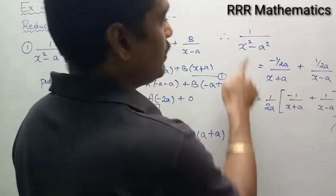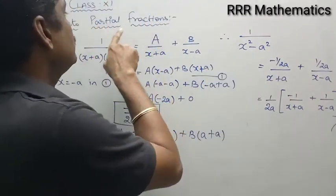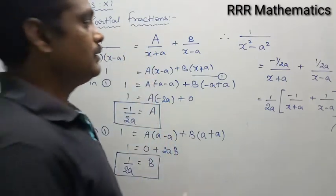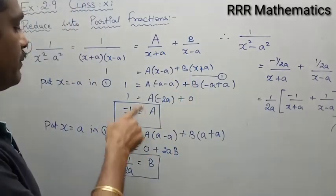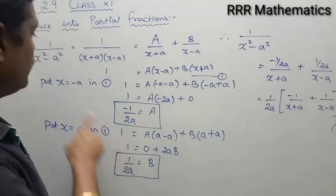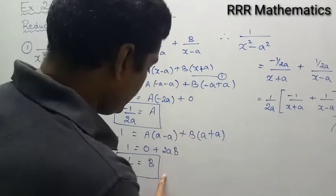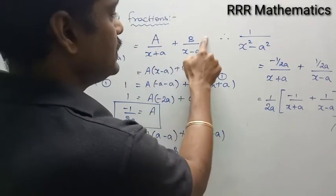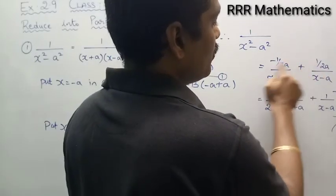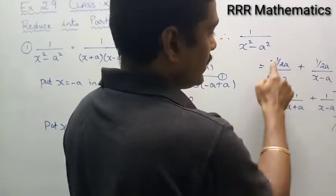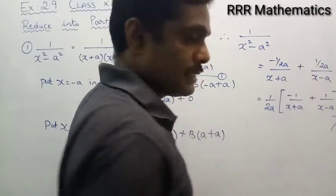If you want to verify, simply take the LCM of the two terms and simplify - you will get back the original fraction. We split the given fraction into partial fractions, found the values of capital A and capital B, and substituted them back. Taking 1 by 2a as common from the numerator gives the final simplified form.